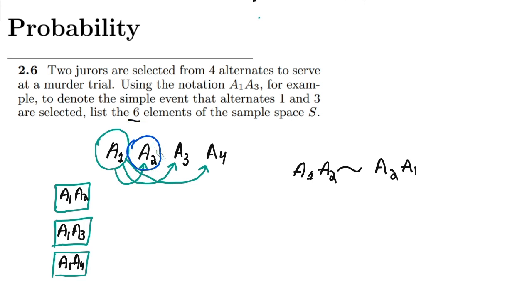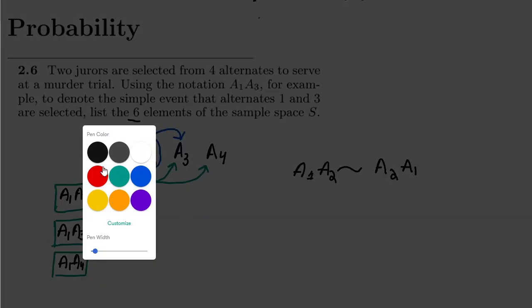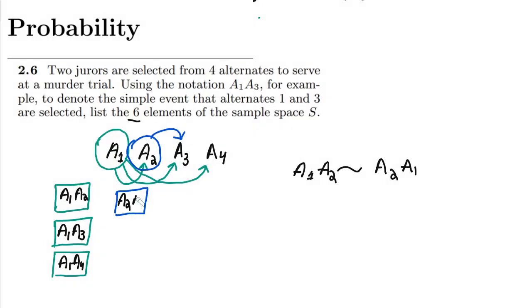Going to the right side, the first valid combination for a2 is with a3, giving a2 a3. The second valid combination is a2 with a4, giving a2 a4. Those are the combinations for a2.